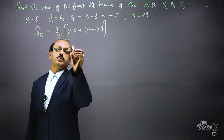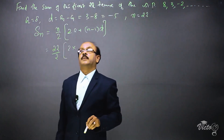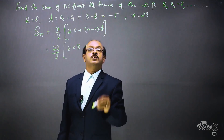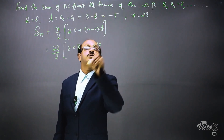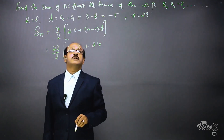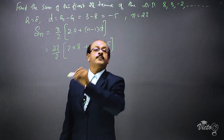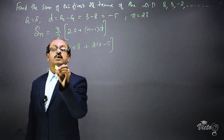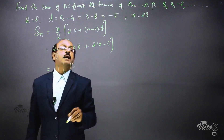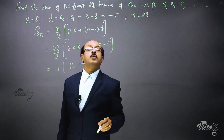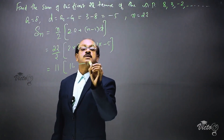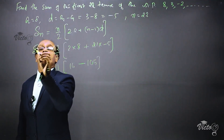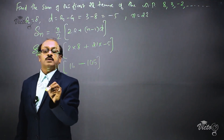So S22 equals 22 by 2, into 2 times 8 — which gives 16 — plus n minus 1, that is 21, into d which is minus 5, giving minus 105. So S22 equals 11 into the quantity 16 plus 21 times minus 5.